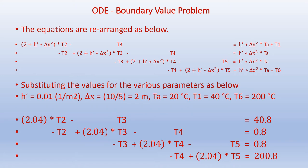We rearrange the equations and substitute the various parameter values: H dash equals 0.01 per meter squared, delta x equals 10 over 5 which equals 2 meters, T_a equals 20 degrees Celsius, T1 equals 40 degrees Celsius, and T6 equals 200 degrees Celsius. We obtain the resulting set of equations.